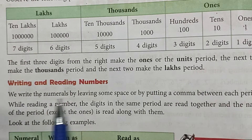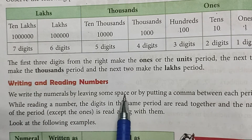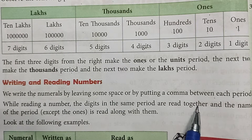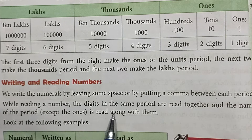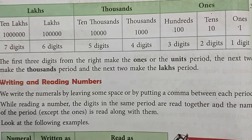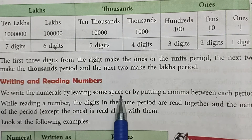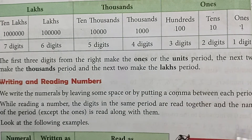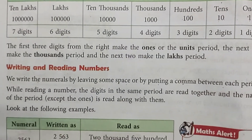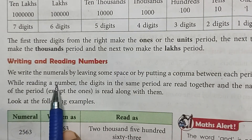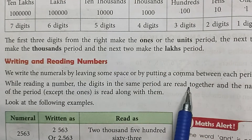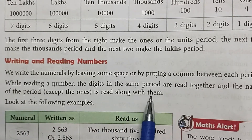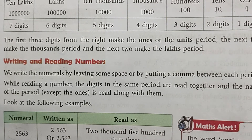Writing and reading numbers: we write the numeral by leaving some space or by putting a comma between each period. While reading a number, the digits in the same period are read together and the name of the period — except the ones — is read along with them. Digits जो एक period की होती हैं उन्हें एक साथ पढ़ा जाता है और उस period का name उनके साथ पढ़ा जाता है।